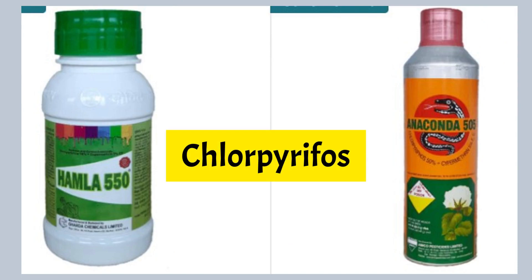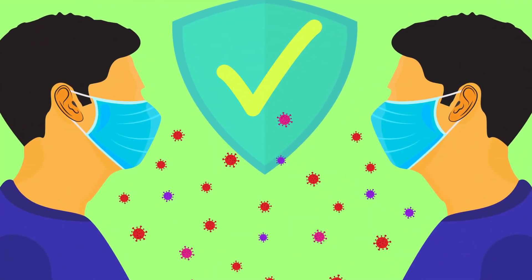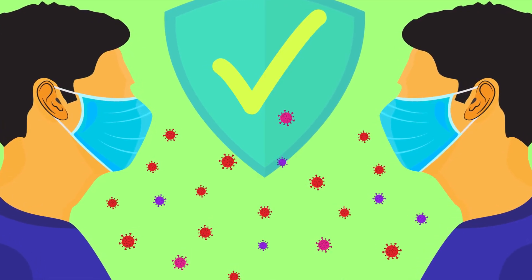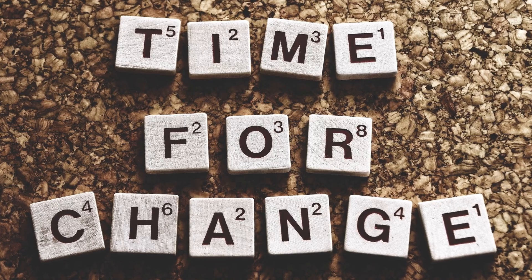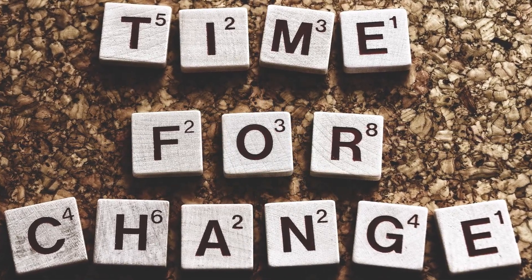Chlorpyrifos: chlorpyrifos is highly toxic and an organophosphate insecticide effective against thrips, but it might negatively impact human health and the environment. Apply it with caution and only as a last resort. Read the instructions on the insecticide label carefully, including application rates and safety precautions.